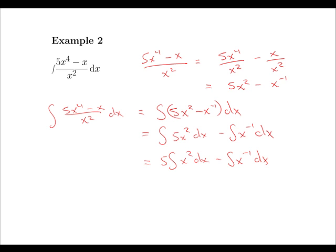And so using the power rule on the first integral we get 5x^3 over 3. And then noting that the second integral is the exception to the power rule, we have minus ln|x| plus the constant c.